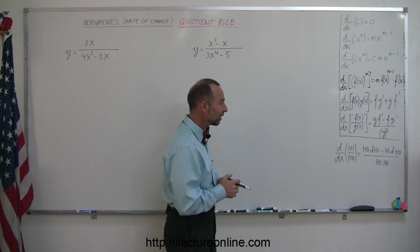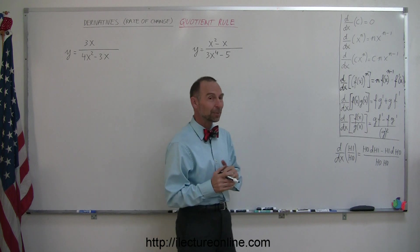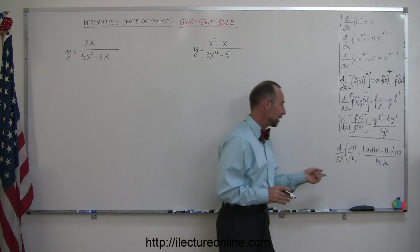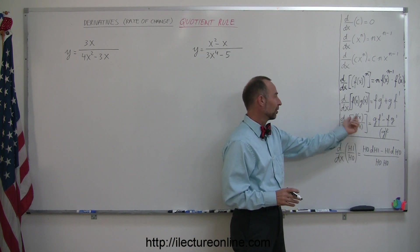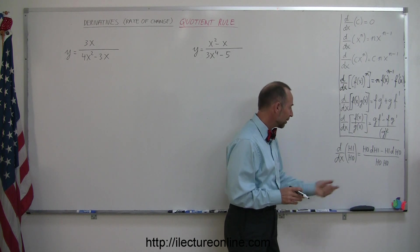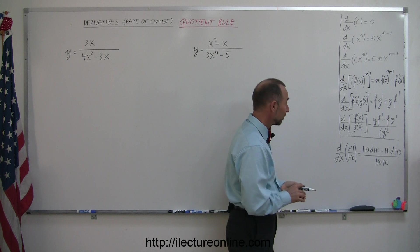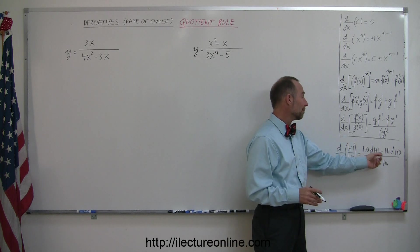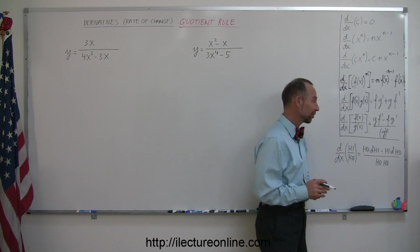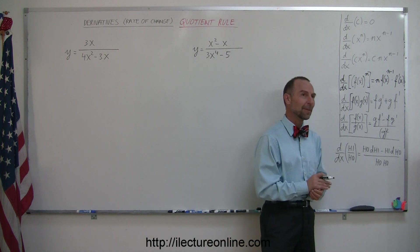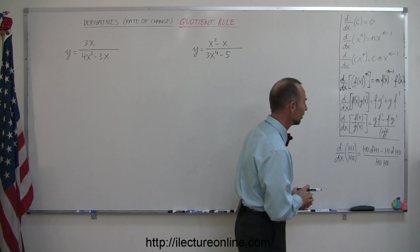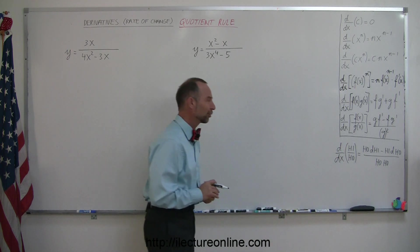My wife had a teacher in high school who tried to come up with a nice little phrase to make that easier to remember. If we represent the function in the numerator by hi and the function in the denominator by ho, the derivative would be ho d-hi minus hi d-ho over ho-ho. Sounds kind of quirky but it actually works. Ho-ho meaning the denominator squared.